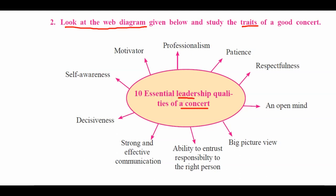In this circle, ten essential leadership qualities of a concert are given. The first is Professionalism. Second, Patience. Third, Respectfulness. Then an Open Mind. Then number five, the Big Picture View. After that, ability to entrust responsibility to the right person. Then strong and effective communication. Then Decisiveness. Self Awareness and Motivator. So all these are the ten essential leadership qualities of a good concert.